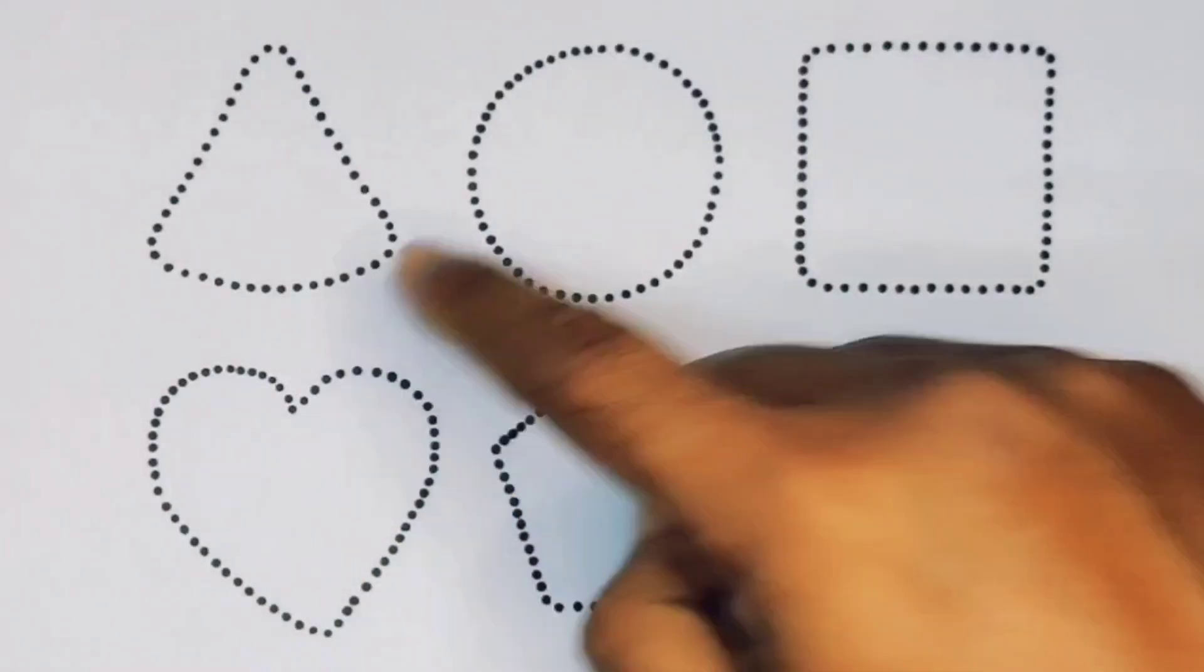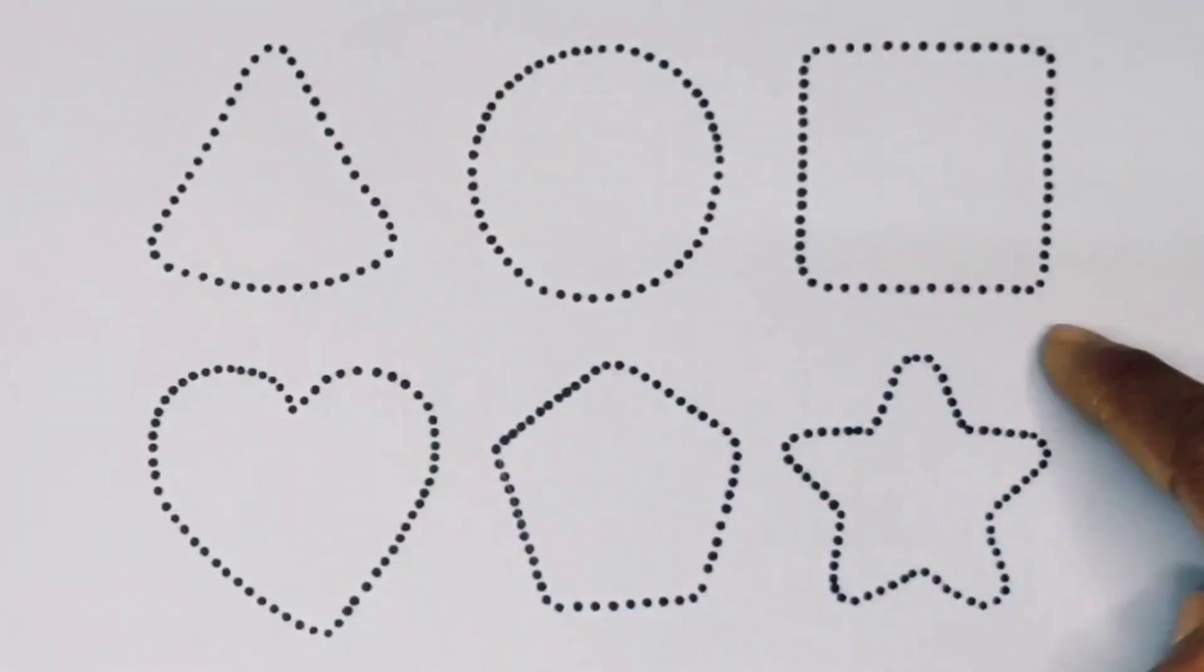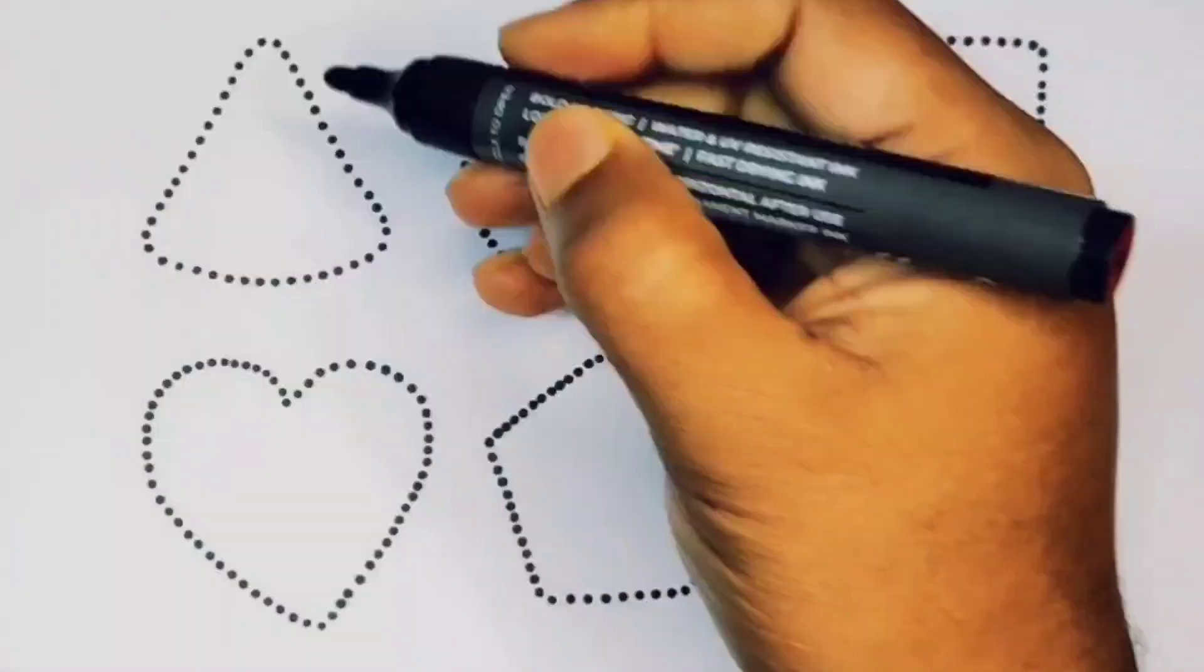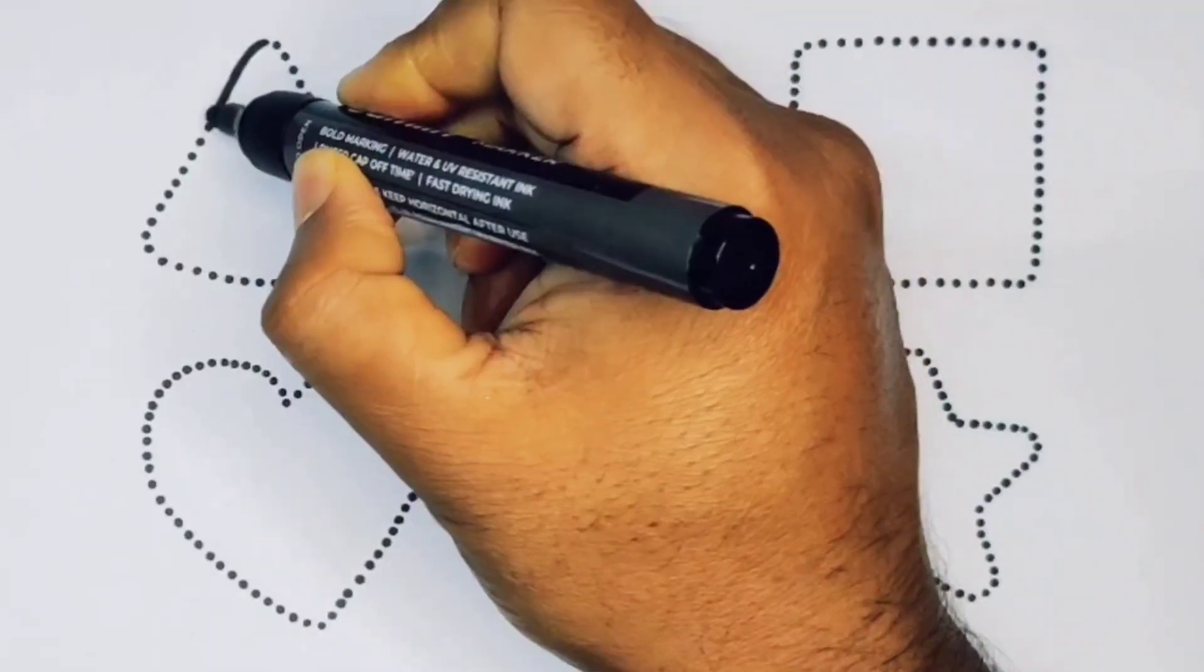Triangle, circle, square, heart, pentagon, and star. First we're going to draw the shapes. Triangle.